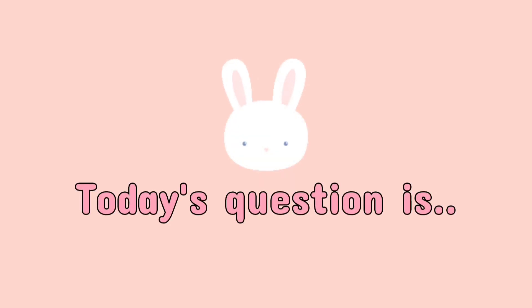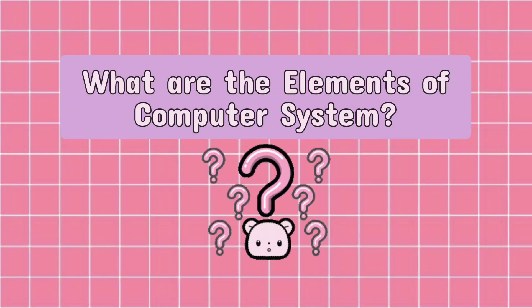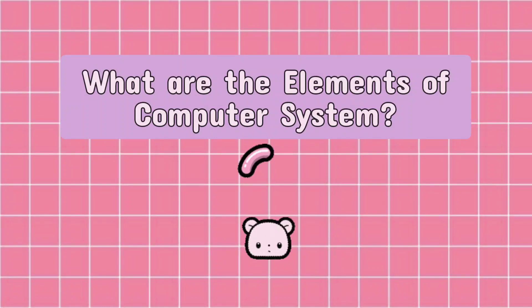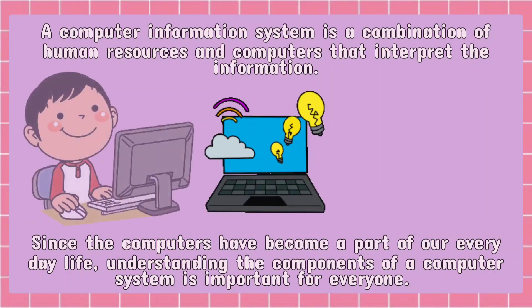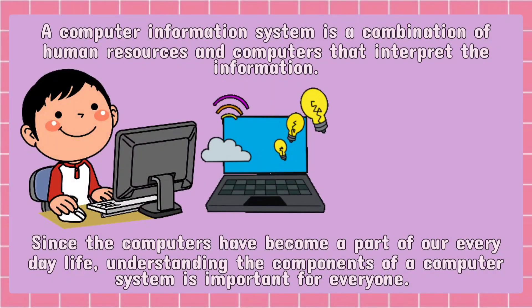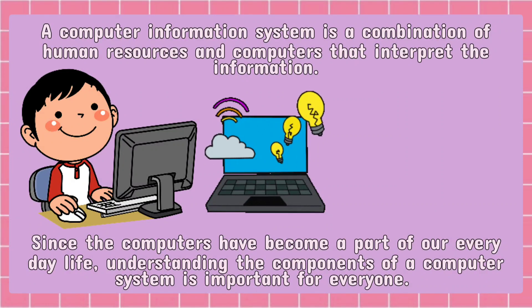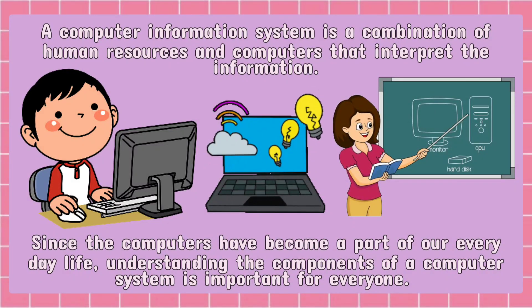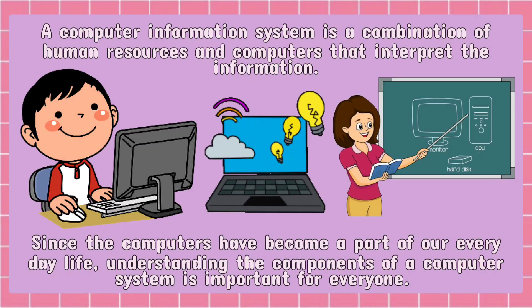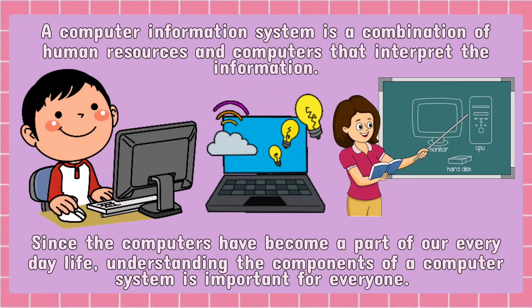Today's question is: What are the elements of a computer system? A computer information system is a combination of human resources and computers that interpret the information. Since computers have become a part of our everyday life, understanding the components of a computer system is important for everyone.